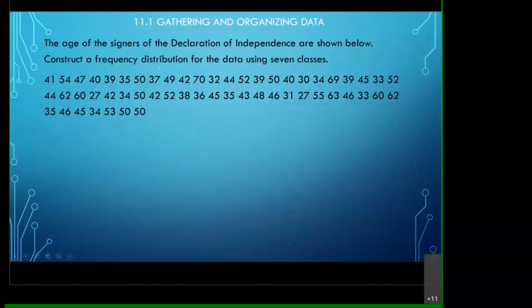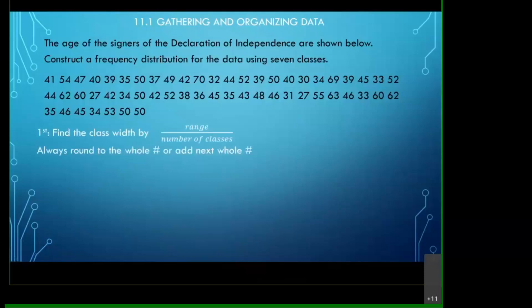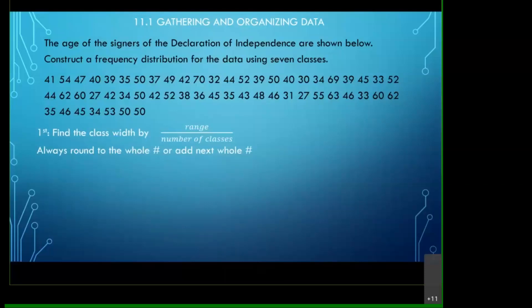What we need to do is construct a frequency distribution table using the data with seven classes. Sometimes they don't tell you how many classes to use, but in this case they specifically want seven. To construct the table, the first thing we need to find is our class width — how big is each class, and how many data points are considered in one class.